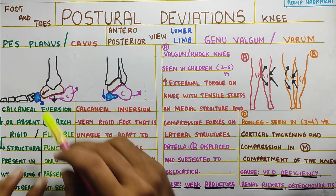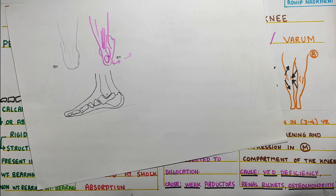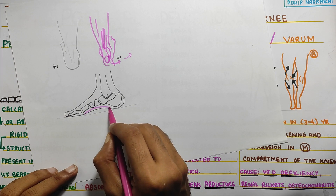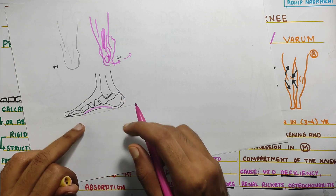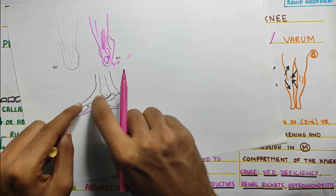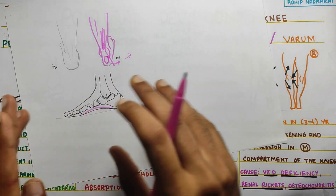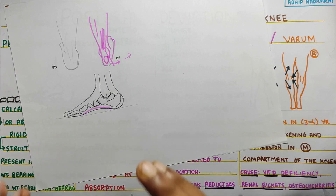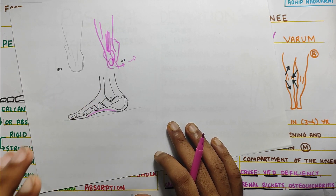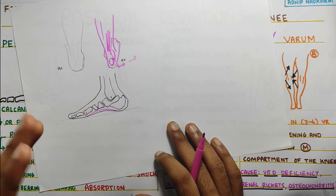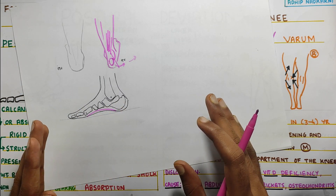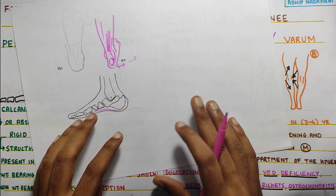So calcaneal eversion happens along with reduction or absence of your medial arch. The medial arch that you can see here is lost because the calcaneum goes for eversion and the navicular drops. If you want to know more about the mechanics, check out my video on ankle joint supination-pronation — that will give you a much better idea on this topic.